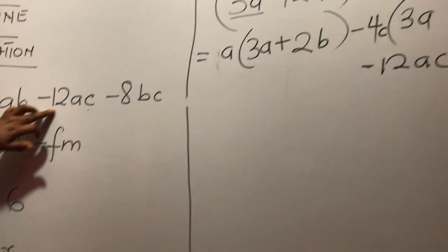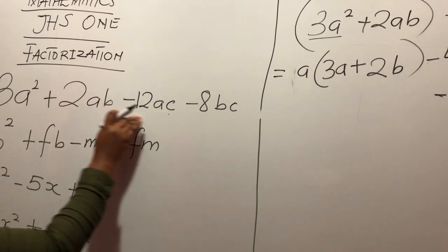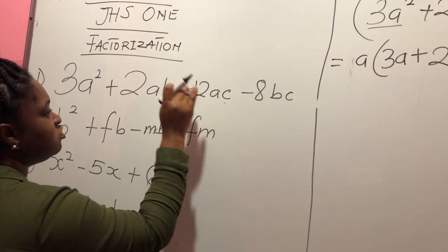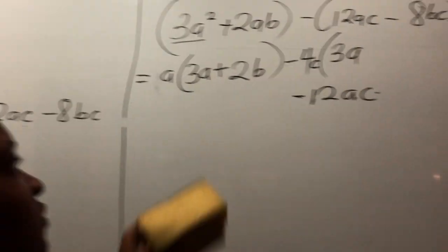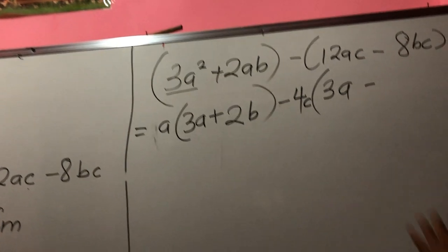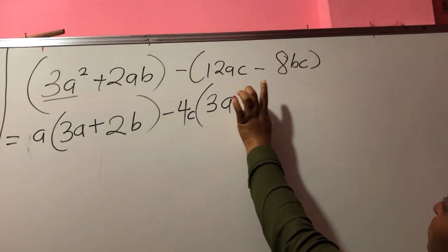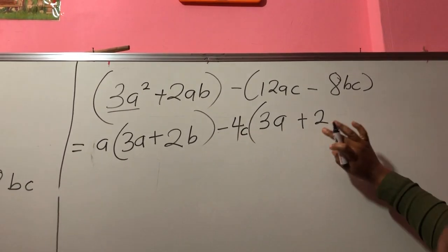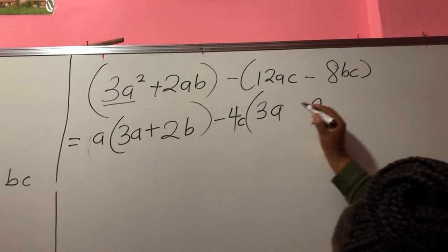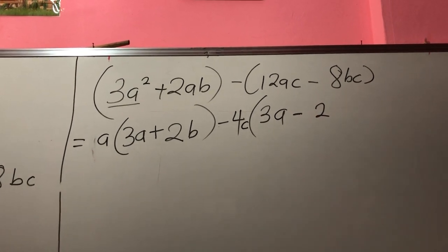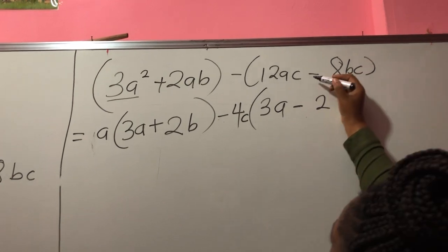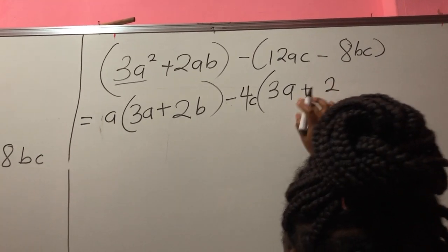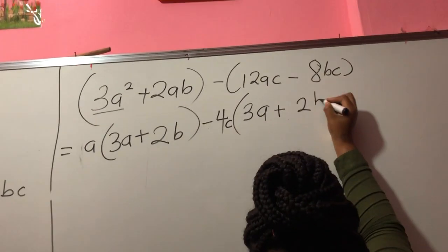Negative 4 times what number will give you 8BC? It is going to be 2. Because negative 4 times 2 will give you negative 8. If you write a negative 2 here, you are wrong, because negative 4 times negative 2 will not give you negative 8 — it will give you positive 8, which is not what is in the question. So the sign here is plus, and what you have left in the bracket is B.